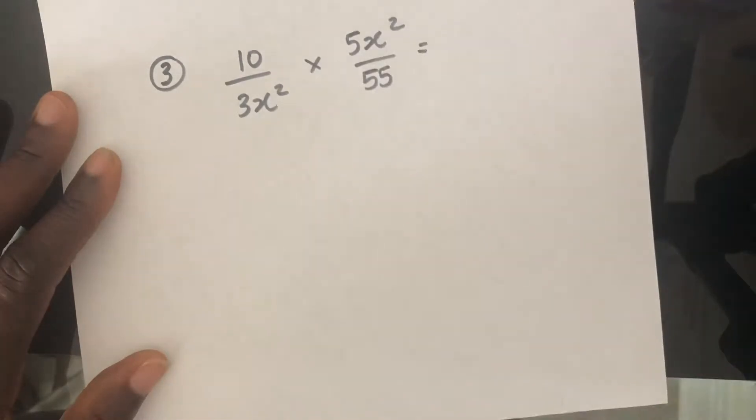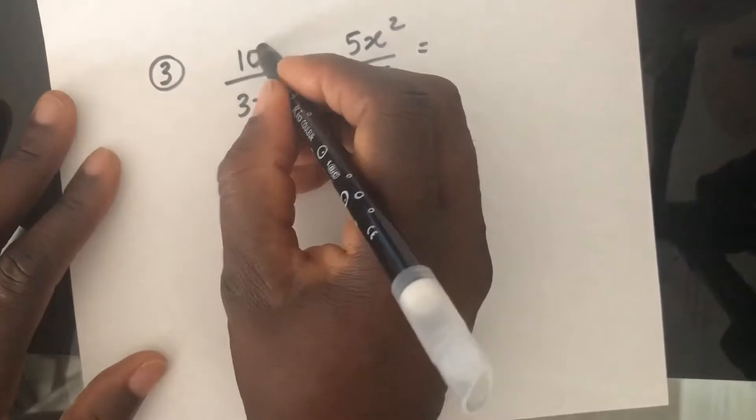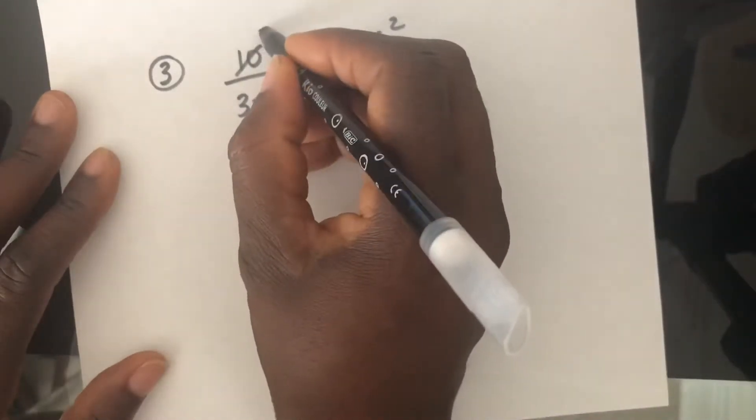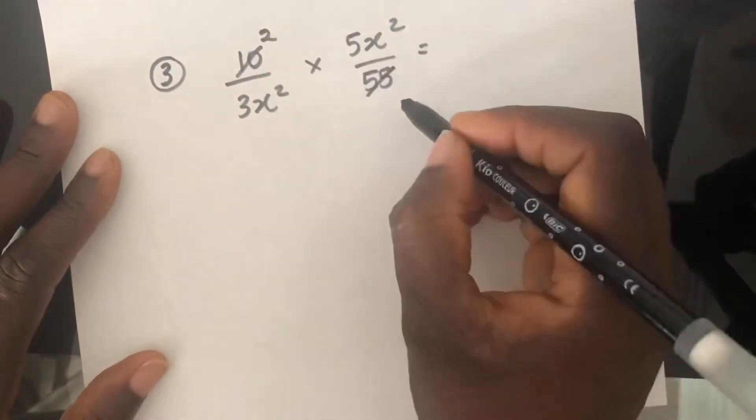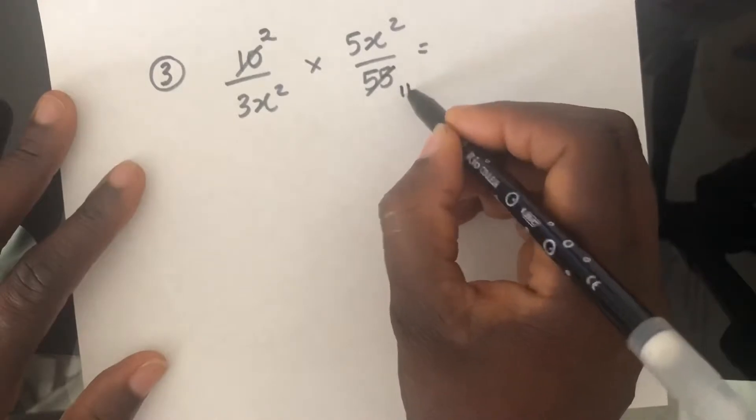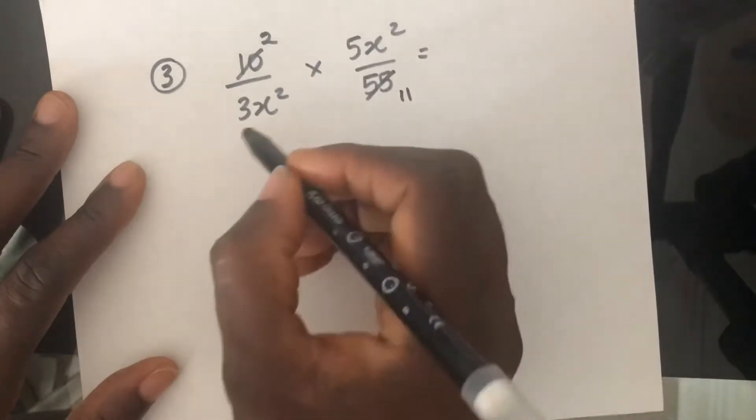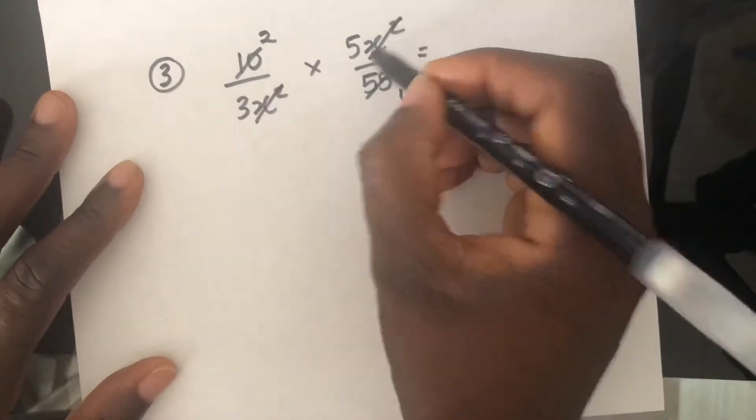I'm looking for things that may cancel down. I think 5 can go into 10 two times and 5 can go into 55, 11 times. 3X squared can cancel X squared.